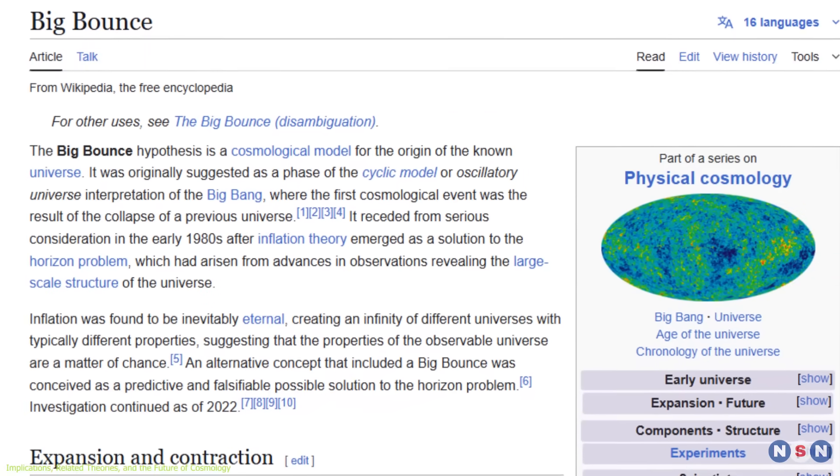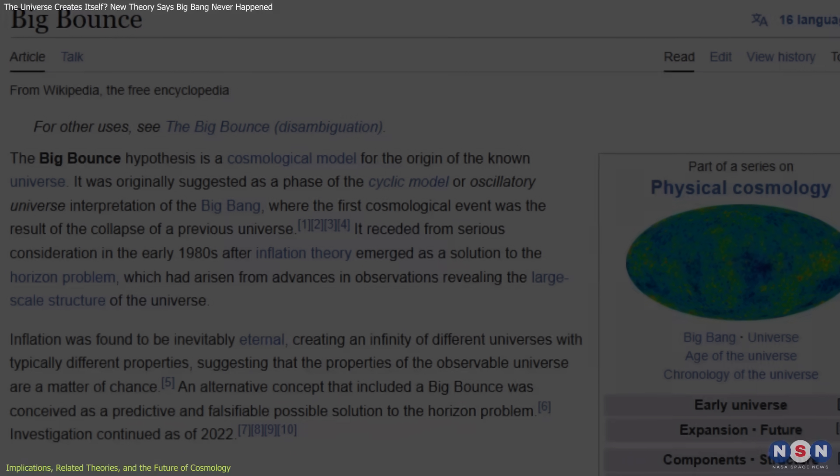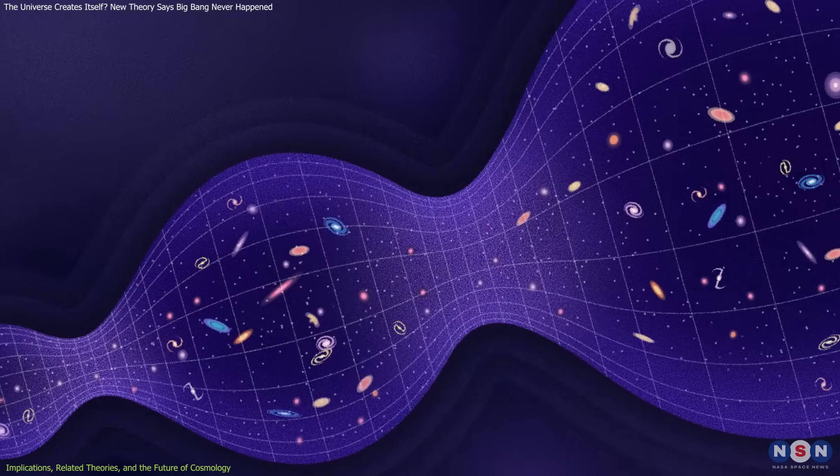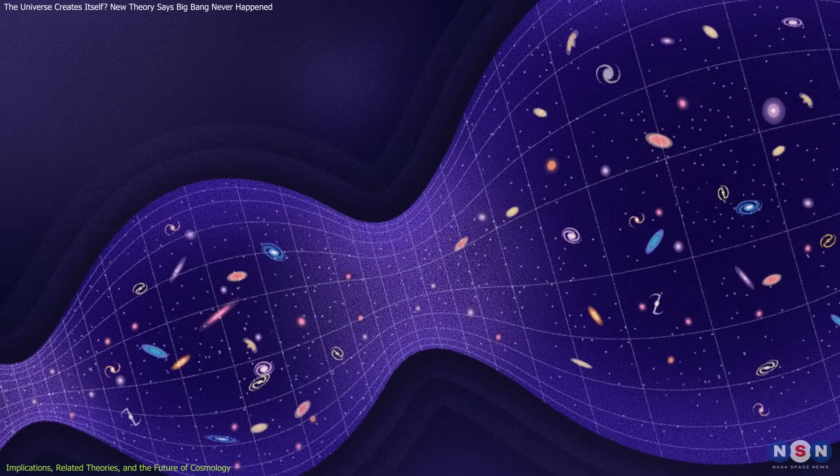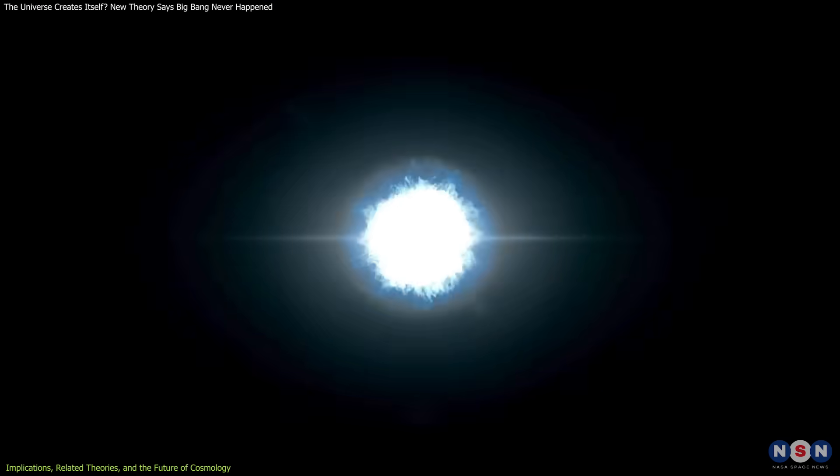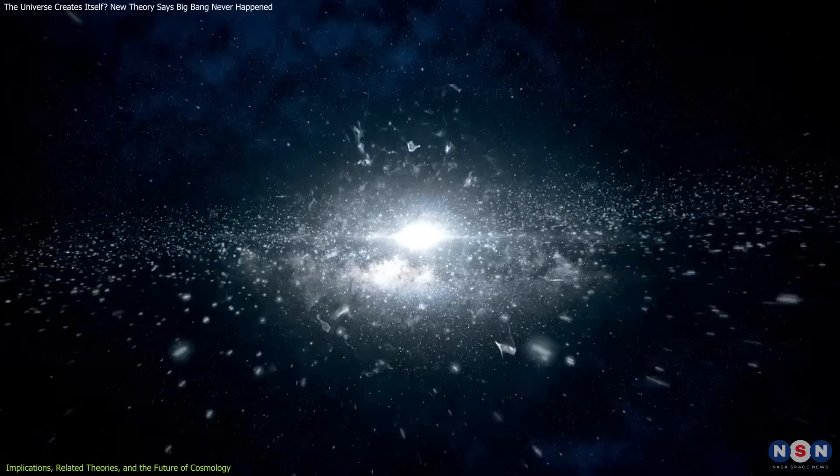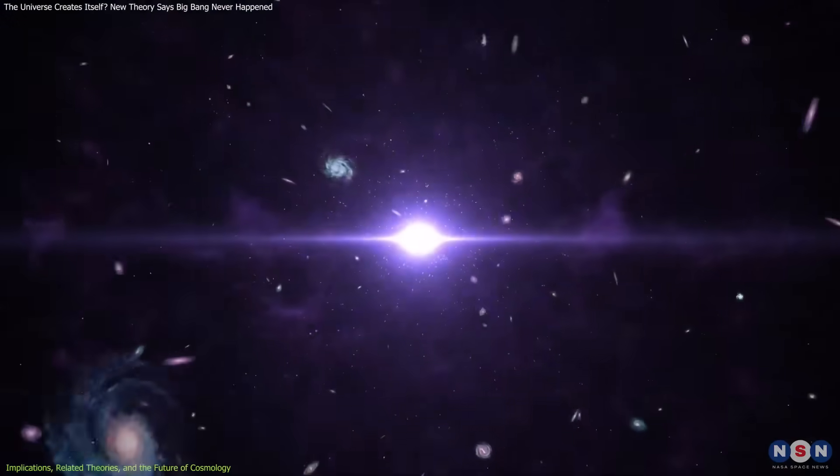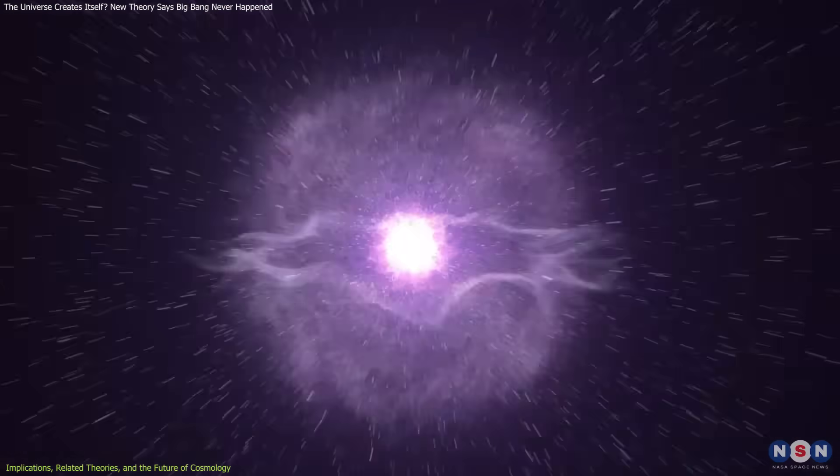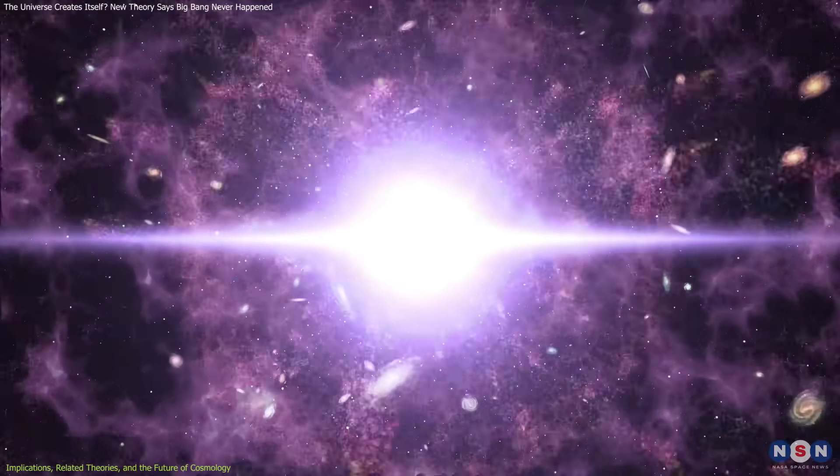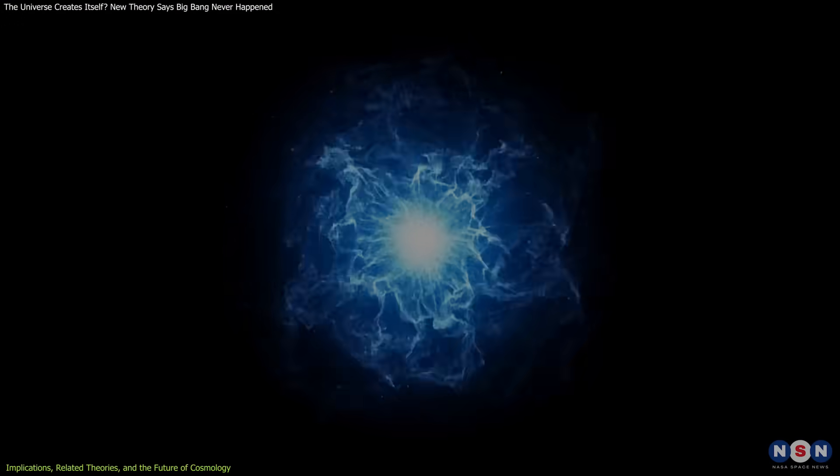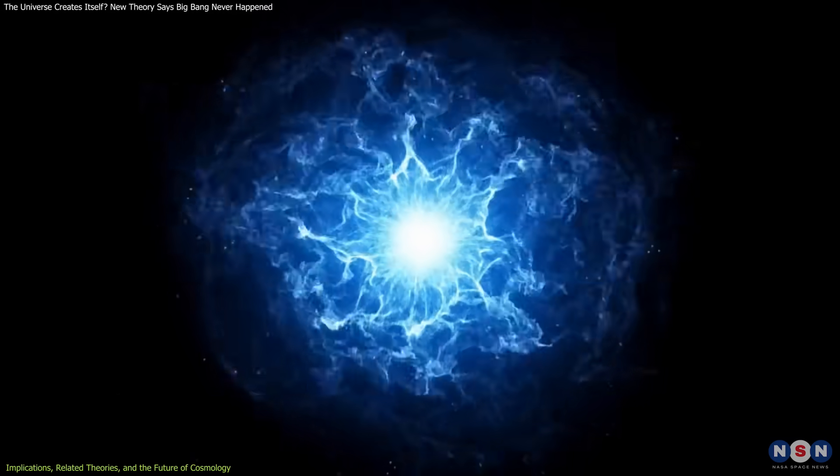One notable example is bounce cosmology, which envisions the universe in a constant cycle of contraction and expansion. According to this model, the universe never had a true beginning. Instead, it oscillates through endless phases of collapse and rebirth, with each bounce giving rise to a new cosmic era. This avoids the problem of an initial singularity altogether.